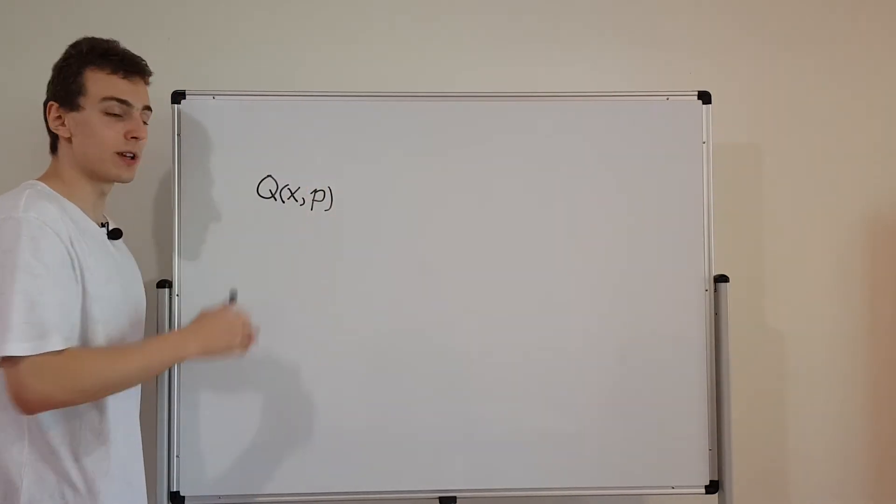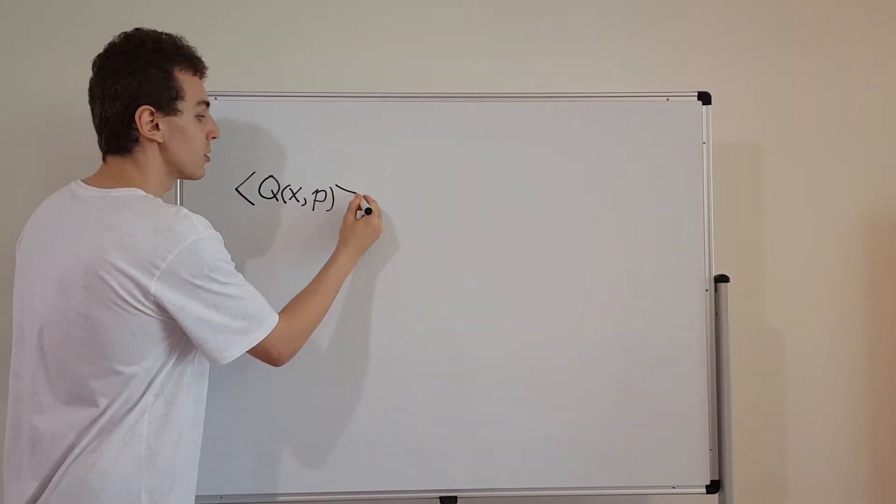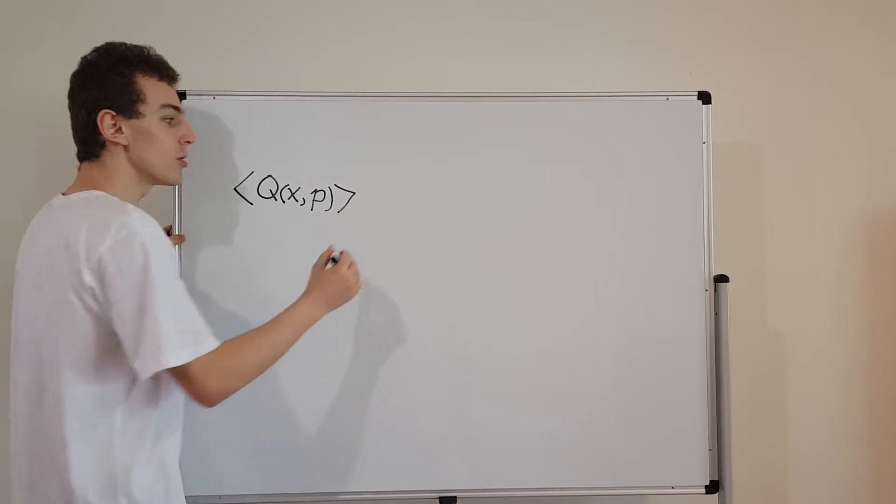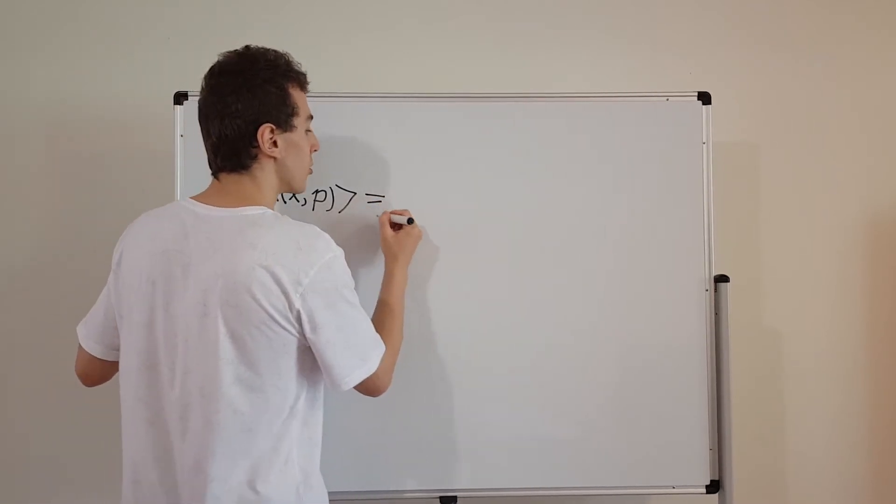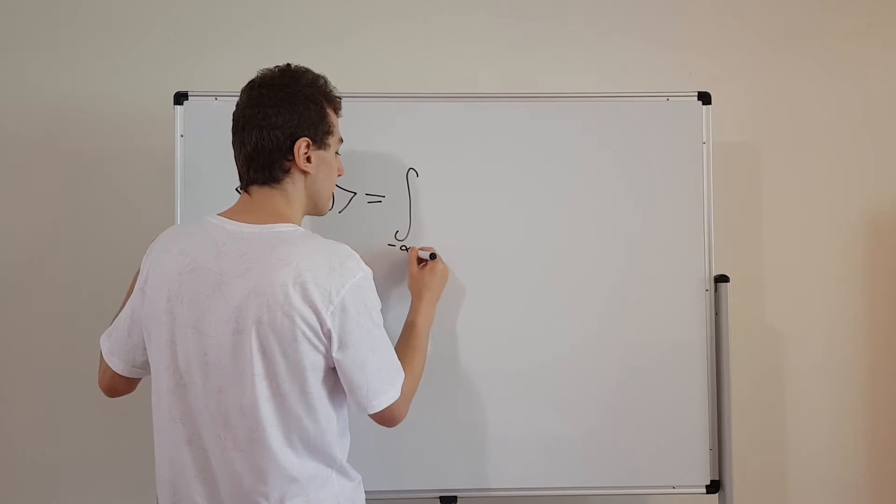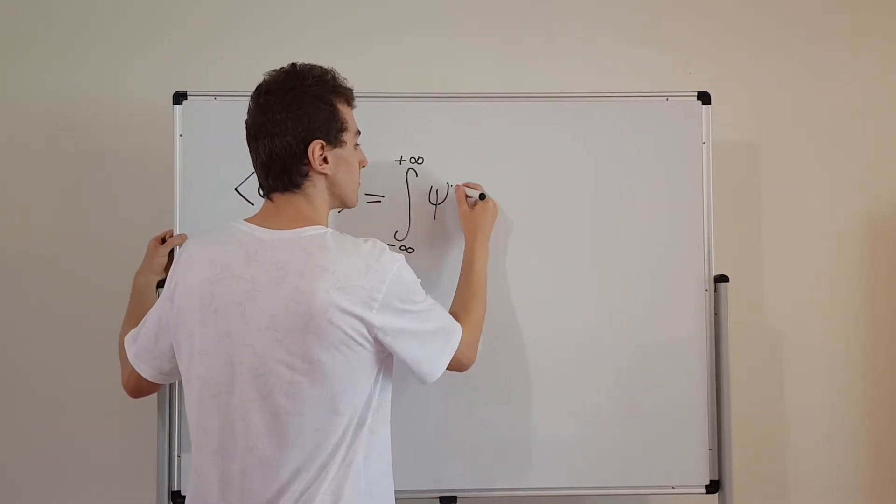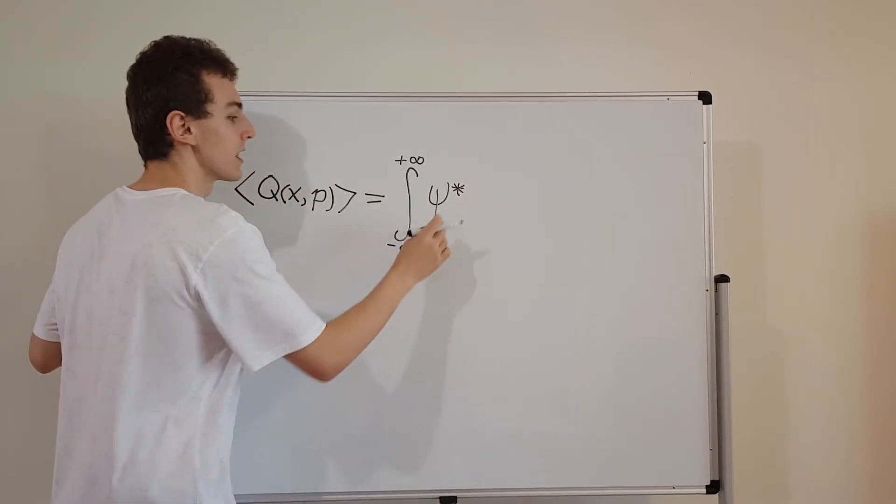So to make this into an expectation value, I'm going to put triangular brackets around here. That's just going to denote the expectation value. So the expectation value of Q is going to be our good old integral sandwich. So we're going to need an integral from minus infinity to plus infinity. We're going to need Psi star, the complex conjugate. That's the lettuce in the sandwich.